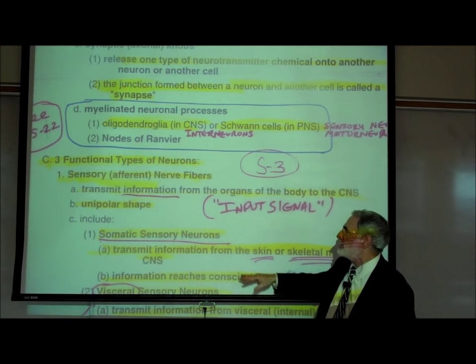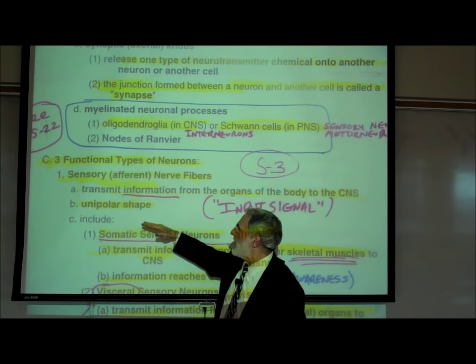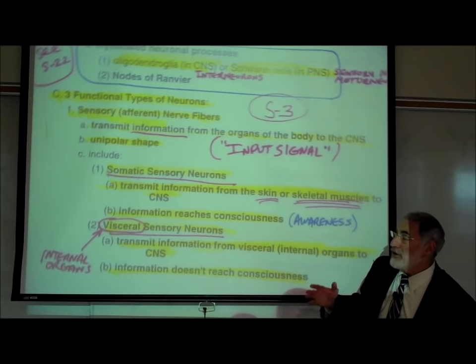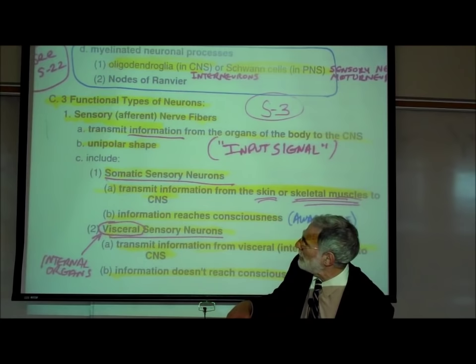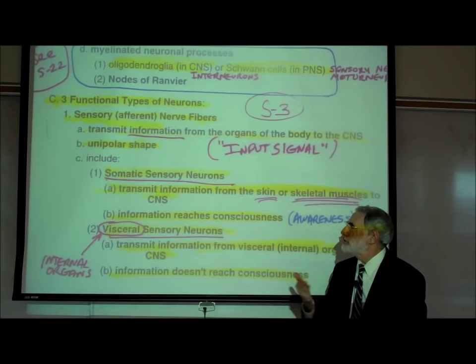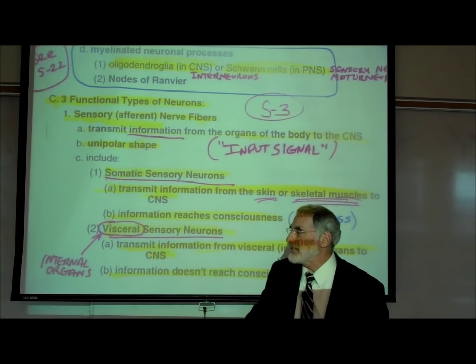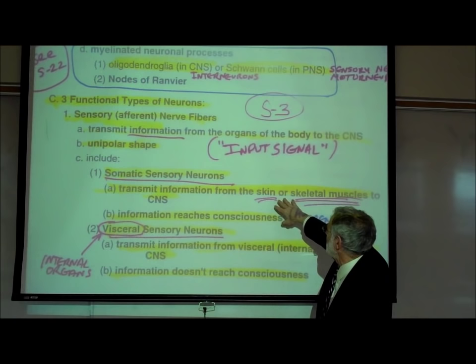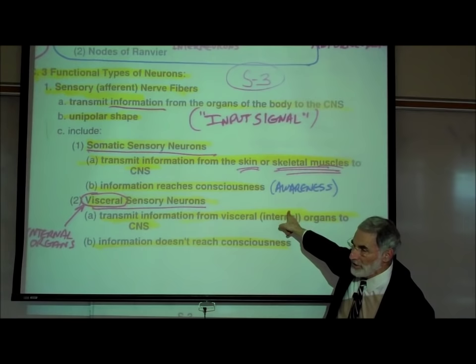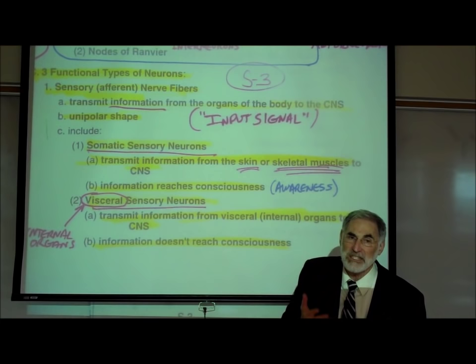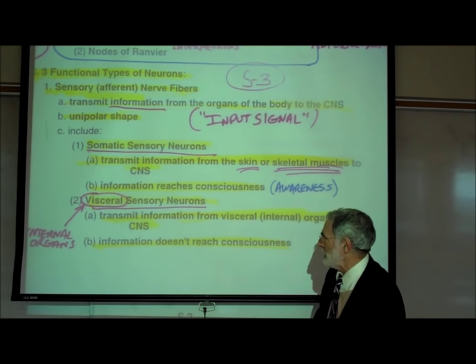Sensory neurons commonly have a unipolar shape. We further subdivide sensory neurons into two subtypes: somatic sensory neurons and visceral sensory neurons. Somatic sensory neurons send information from our skin or skeletal muscles to the central nervous system — to the spinal cord and brain. This information typically reaches consciousness, meaning we are aware of these sensations from our skin and skeletal muscles. We can feel it.